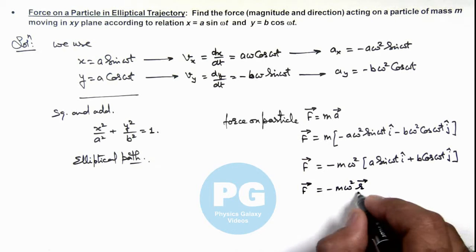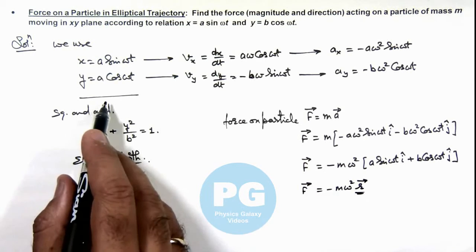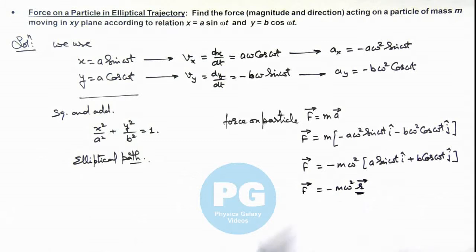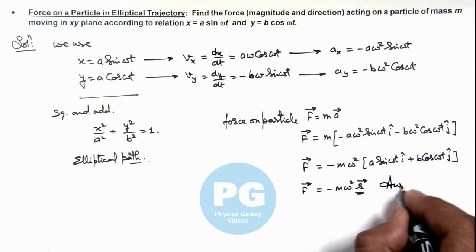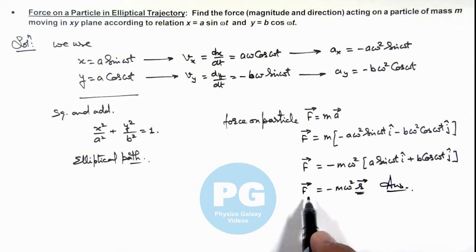Where r vector is the position of particle, position vector of particle with respect to origin. So this is the final result of problem and here you can see, as force is acting opposite to r vector, this is a central force acting on particle always toward the reference point which we are taking as origin.